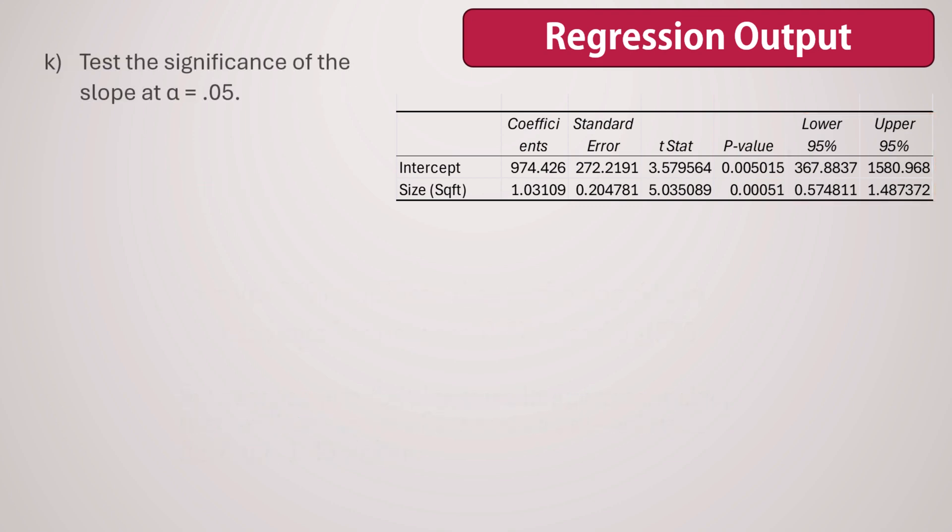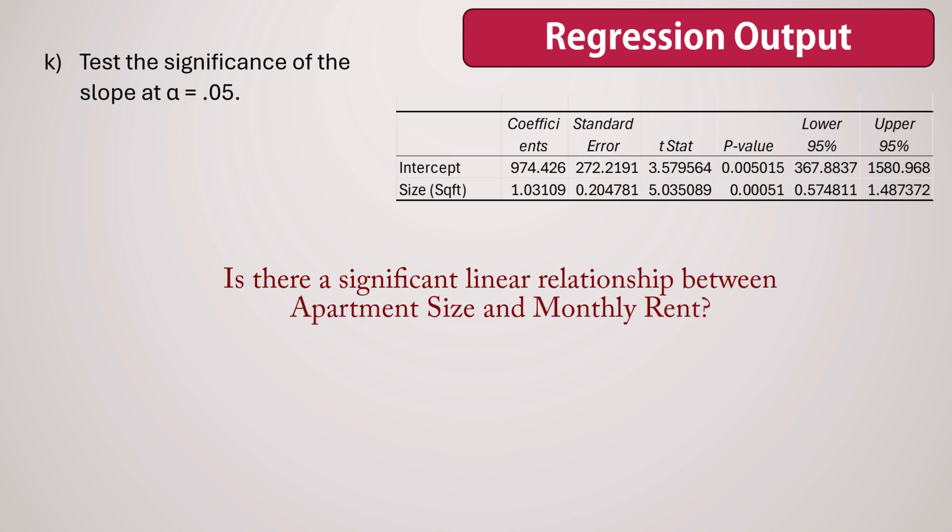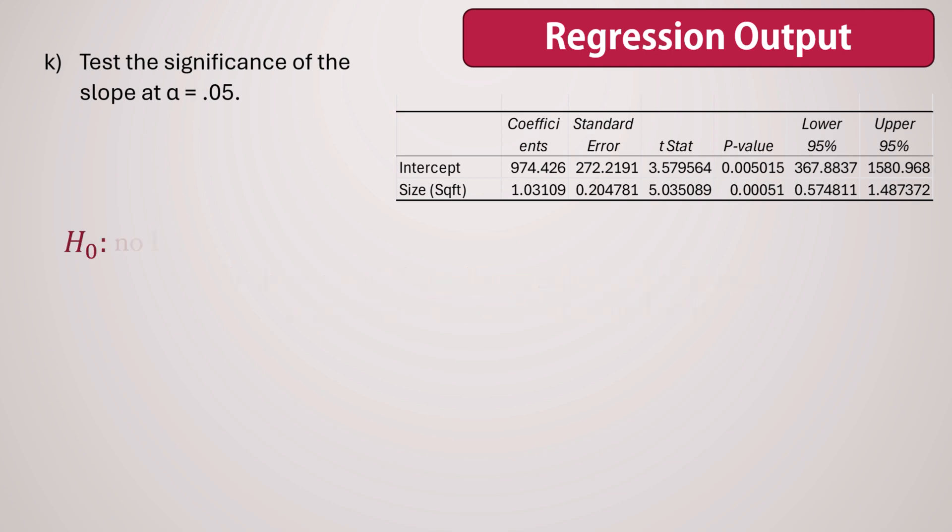Finally, let's test the significance of the slope at 5% significance level. Our goal is to determine if a significant linear relationship exists between apartment size and monthly rent, with alpha set at 0.05. The null hypothesis H0 states that no linear relationship exists between the two variables. In other words, the slope is 0.